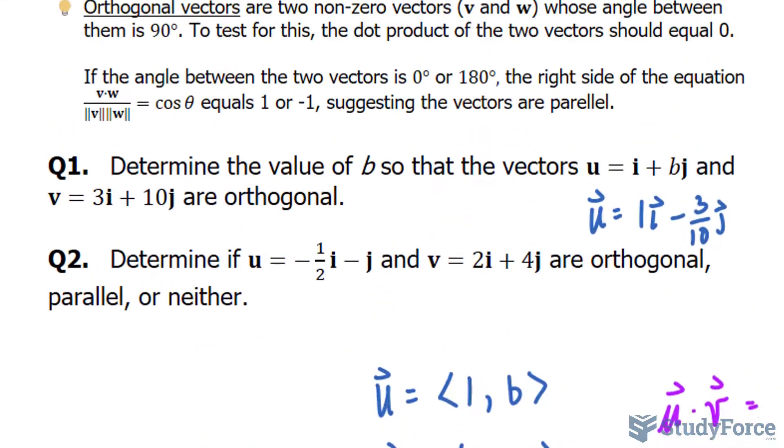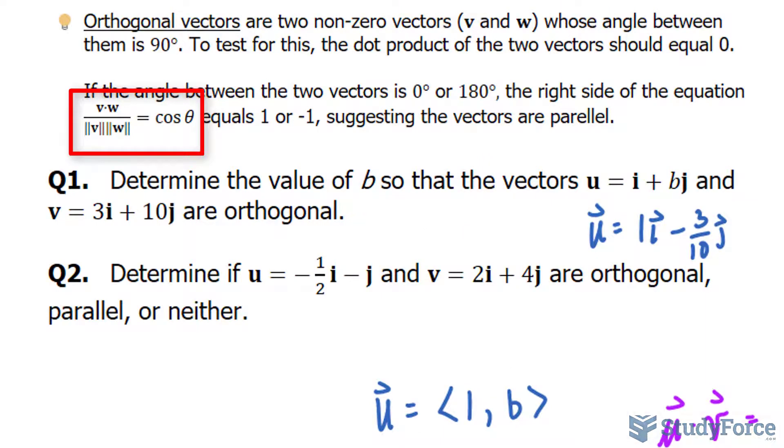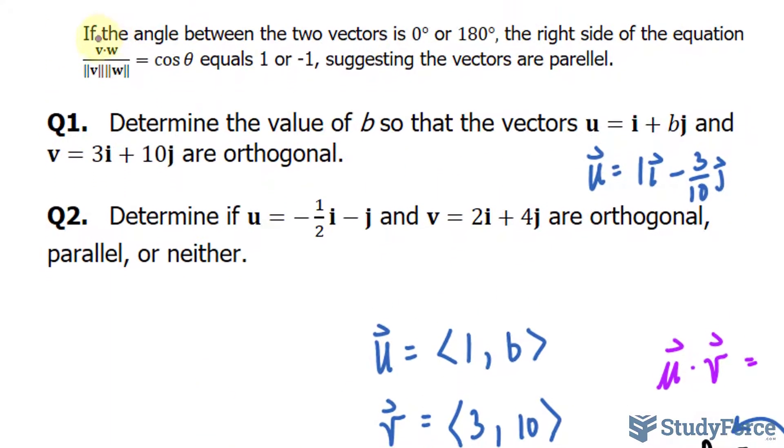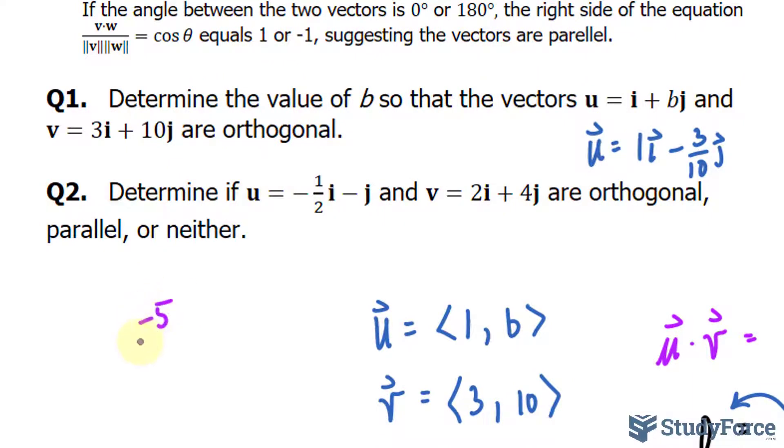Let's use this formula now to help us see whether the right side will equal 1 or negative 1. We found the dot product already. The dot product happened to be negative 5. So that's this part. We have negative 5 at the top.